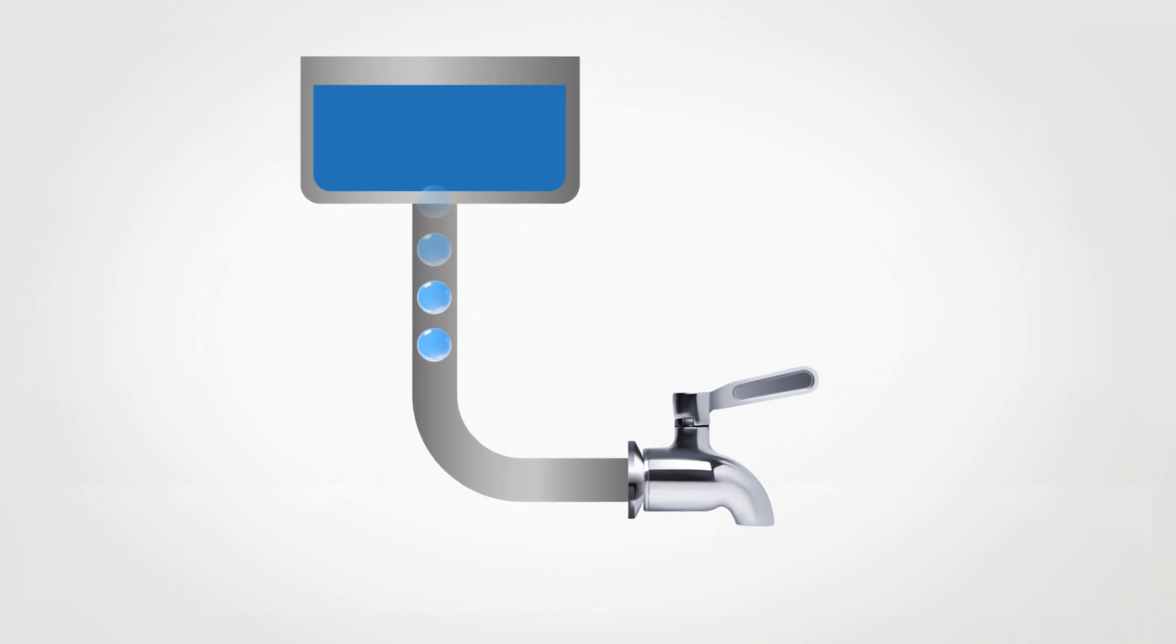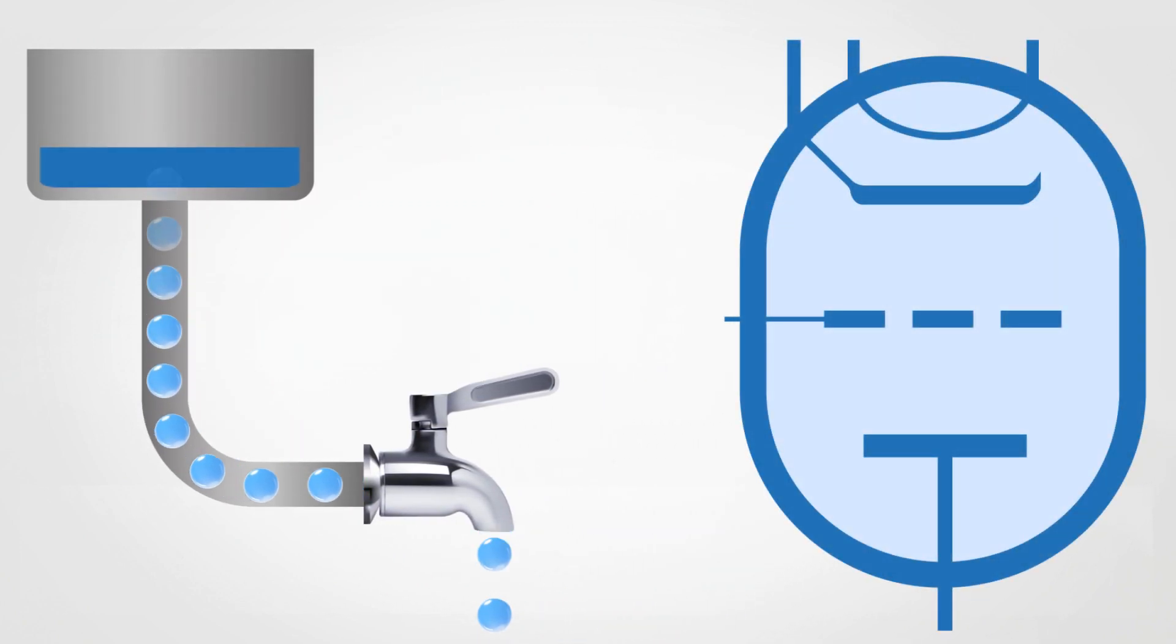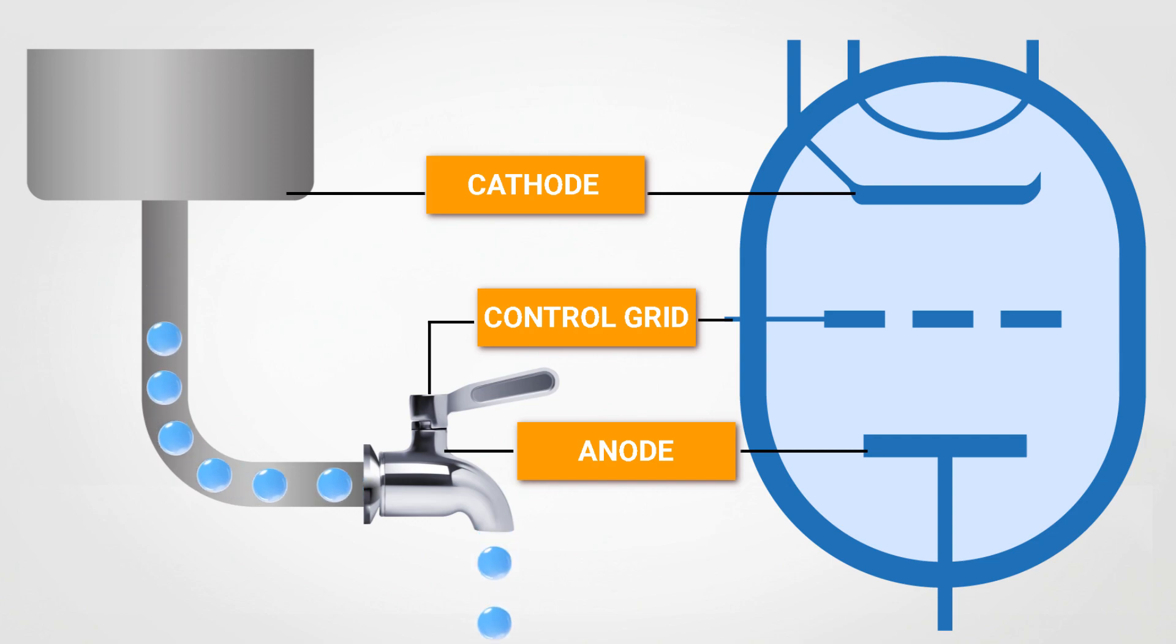Very often, to explain the basic principle of its operation, the triode is compared to a tap that controls the release of a liquid or gas.